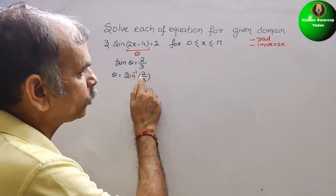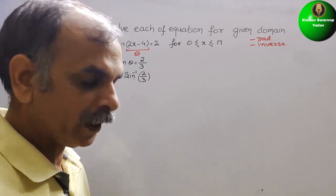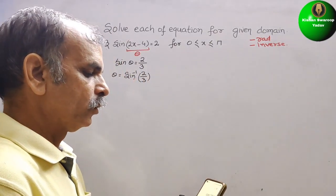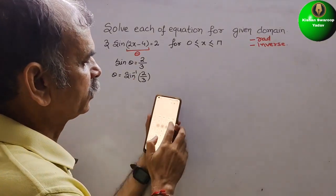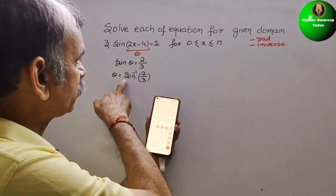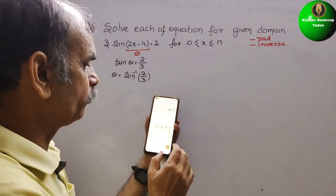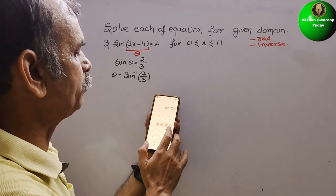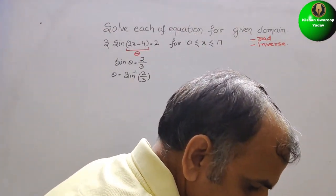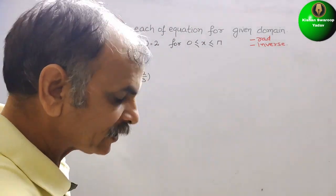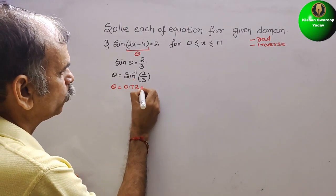A bracket will open, then type 2 divided by 3. So we got 0.7297. Therefore our θ = 0.7297.